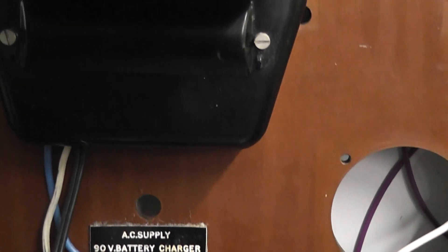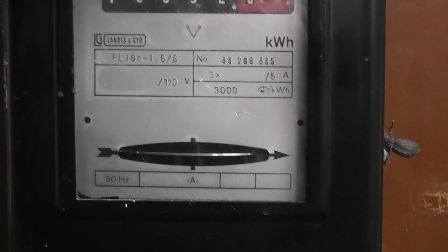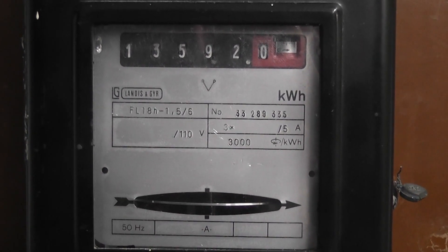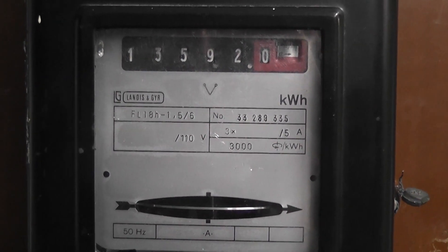Landers and Gyr FL meter. 110 volts. 2 watt meter method. It's actually a precision meter. 3000 revolutions per kilowatt hour.